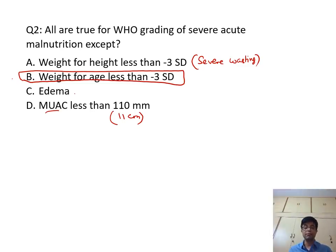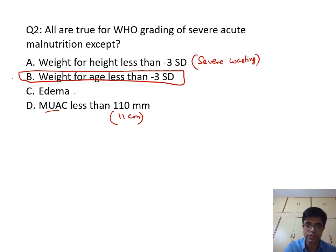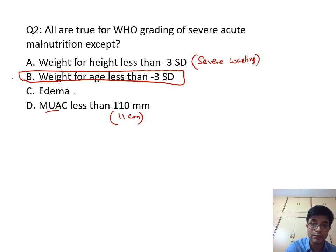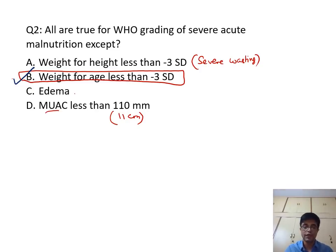This is a repeat question that has been asked in AIIMS, PGI, JIPMER, and NEET in the past. Getting such a question wrong is unacceptable in the AIIMS exam. The answer to question number two is B — the odd one out is B.